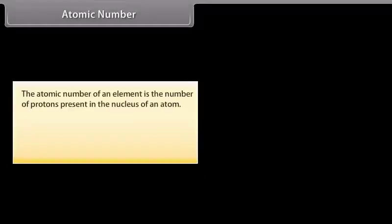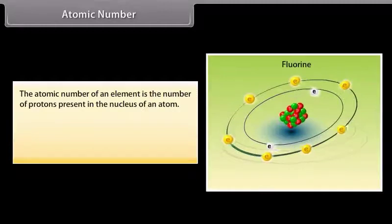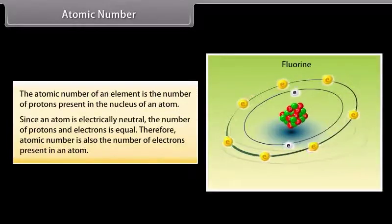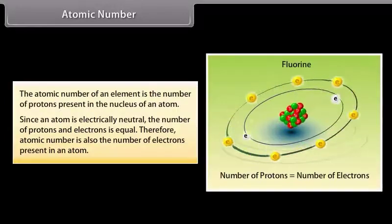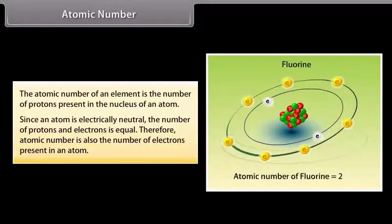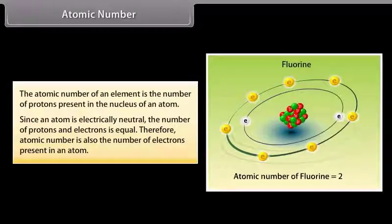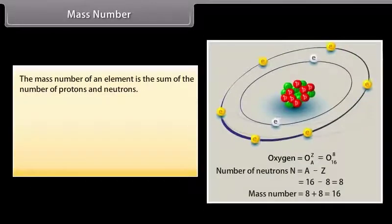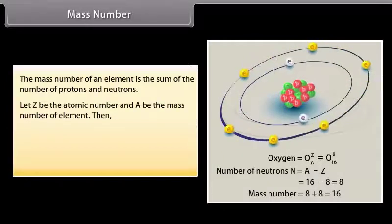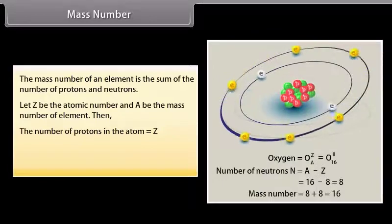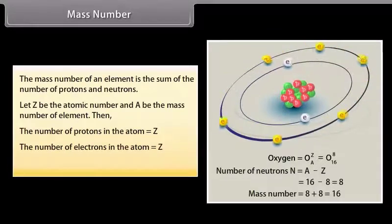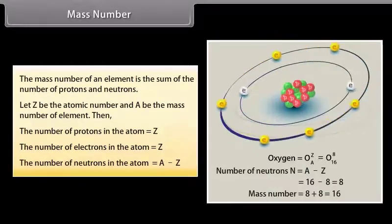Atomic number: The atomic number of an element is the number of protons present in the nucleus of an atom. Since an atom is electrically neutral, the number of protons and electrons is equal. Therefore, atomic number is also the number of electrons present in an atom. Mass number: The mass number of an element is the sum of the number of protons and neutrons. Let Z be the atomic number and A be the mass number. Then the number of protons equals Z, the number of electrons equals Z, and the number of neutrons equals A minus Z.